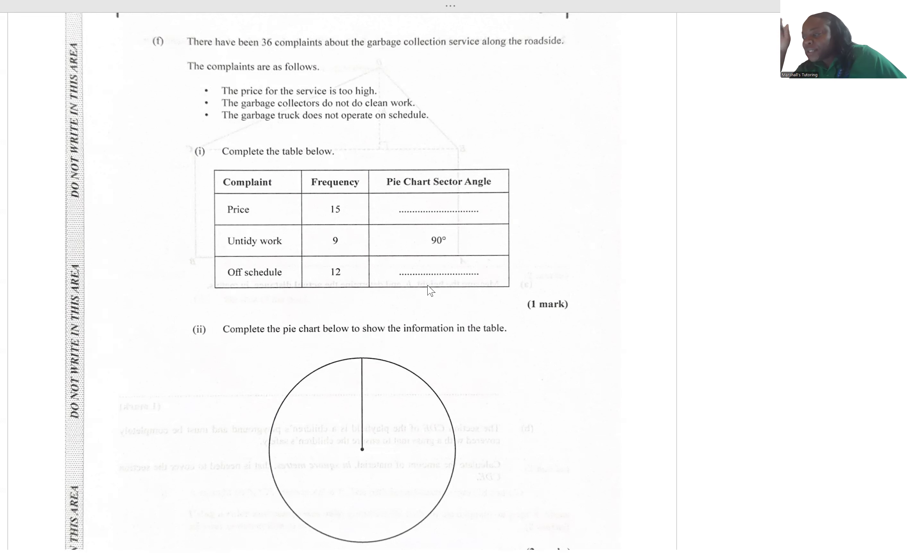We have 36 complaints in all. That's the total frequency. The price is 15 out of 36 complaints, and the entire circle is made up of 360 degrees, so we multiply that by 360. We do the same thing for off schedule. That will be 12 out of 36, and we multiply by 360, and that's going to give us the angle.